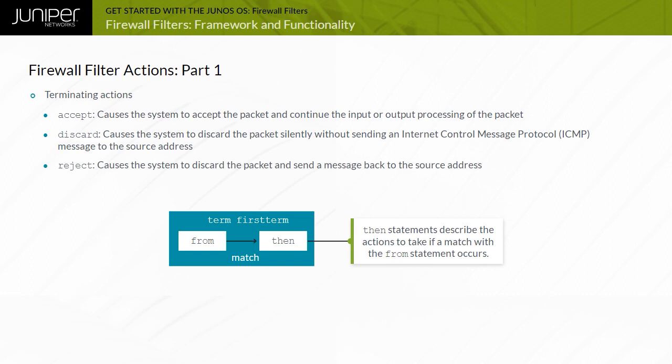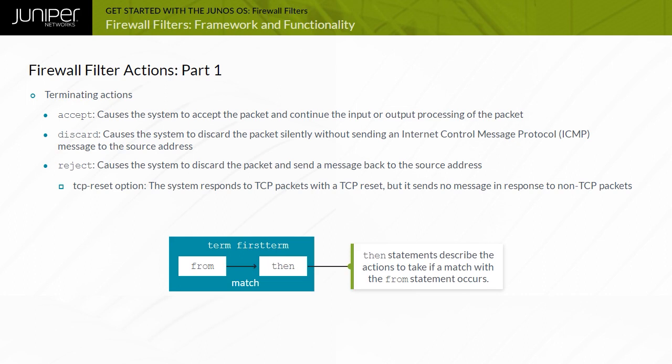The Reject action causes the system to discard the packet and send a message back to the source address. The default message is an ICMP message with a destination unreachable message type and administratively prohibited message code. You can use an optional argument with the Reject action to send a different ICMP message code or a TCP reset. If you specify the TCP reset option, the system responds to TCP packets with a TCP reset but sends no message for non-TCP packets.